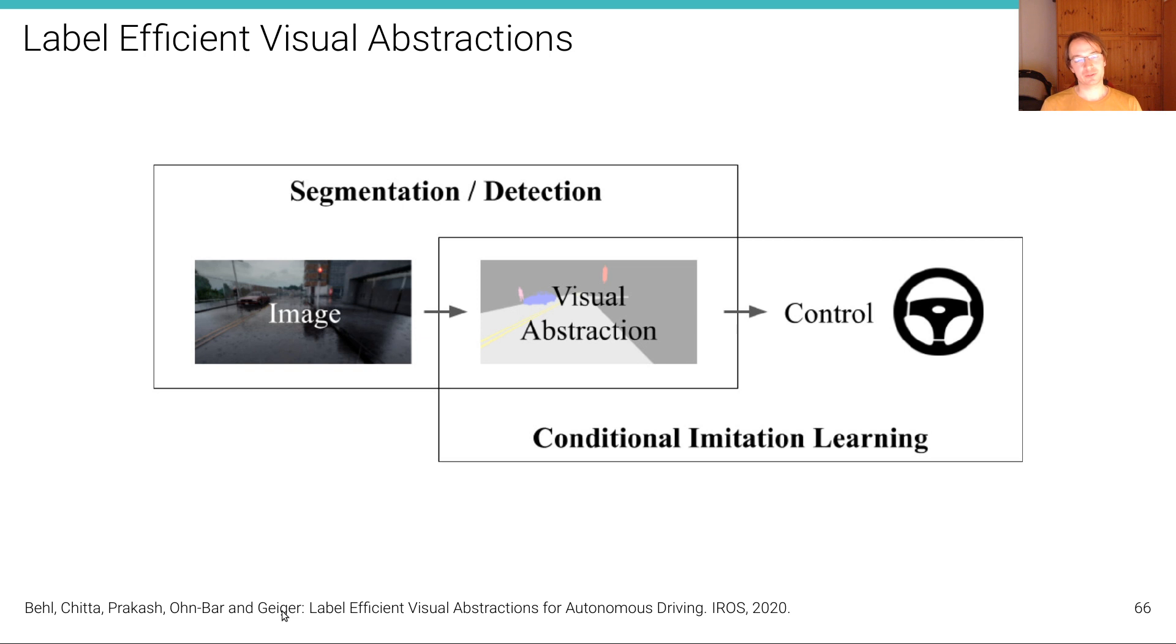Now, we're not only interested in the perception aspect, but we're also interested in combining perception with control. Because we believe that only if we look at the control problem, at an actual feedback loop in terms of a robotic system—in this case, self-driving cars—we are able to learn something about how to develop better vision systems.